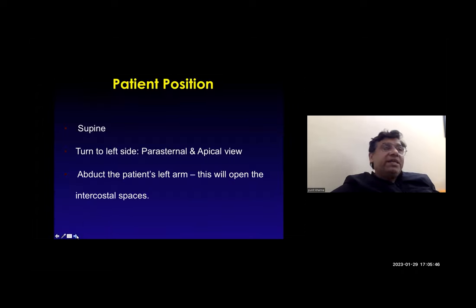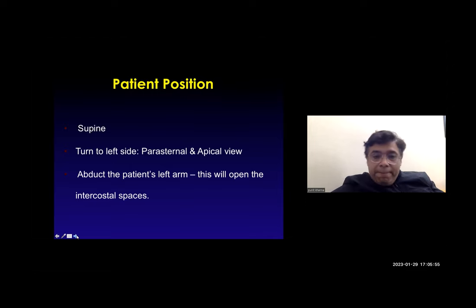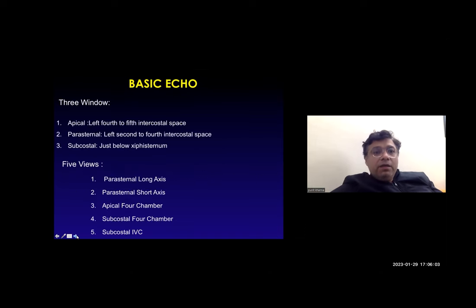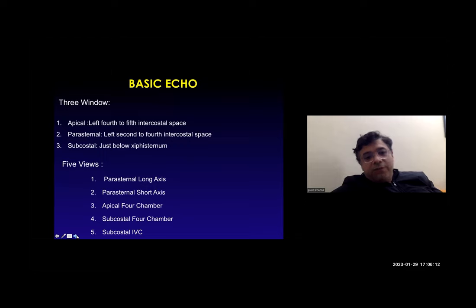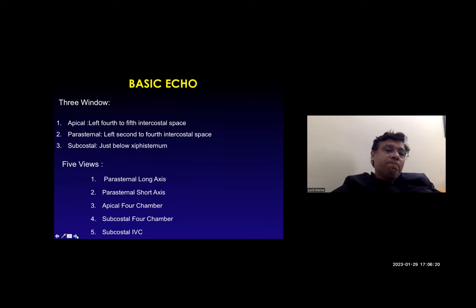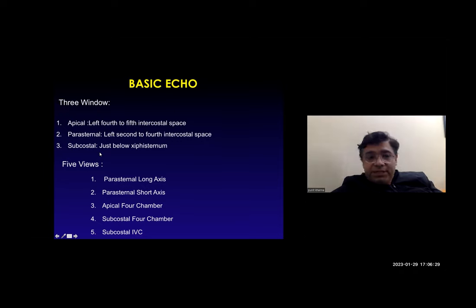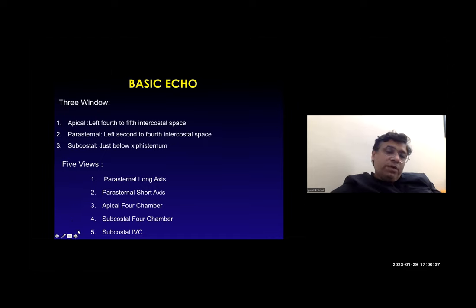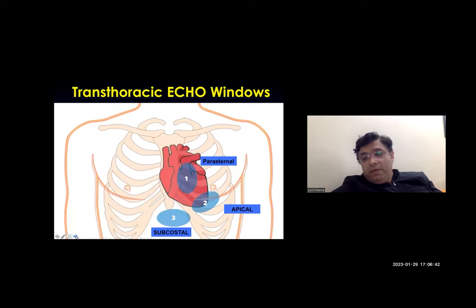The patient is made supine and turned to the left side for parasternal and apical views. When the patient is lying supine, the patient may be asked to abduct the left arm — this will open up the intercostal spaces. There are basically three windows and five views. The three windows are apical, parasternal, and subcostal. The five views are parasternal long axis, parasternal short axis, apical four-chamber, and subcostal four-chamber.